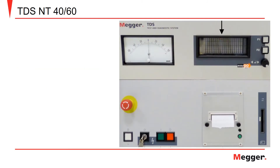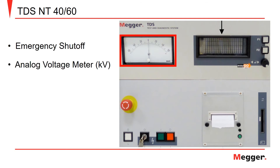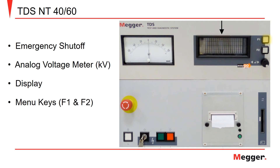Now let's take a look at the user interface for the TDSNT. The user interface features the emergency shutdown switch, an analog kilovolt meter, digital display, F1 and F2 menu keys, and the rotary selector knob and push button.